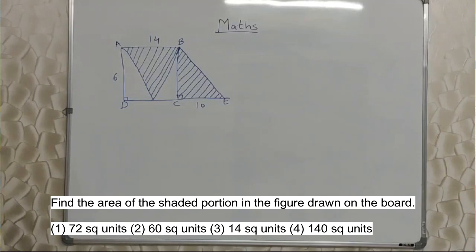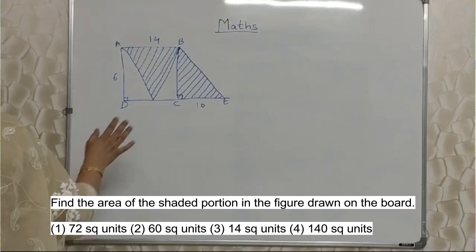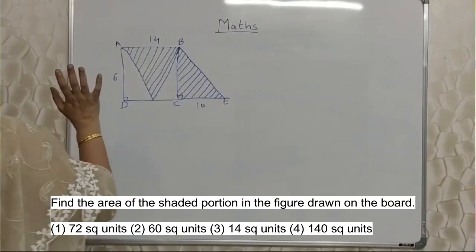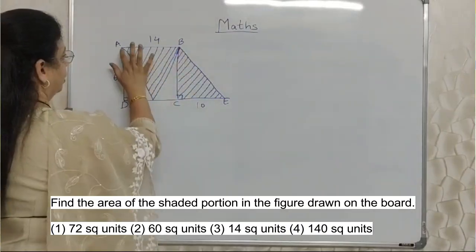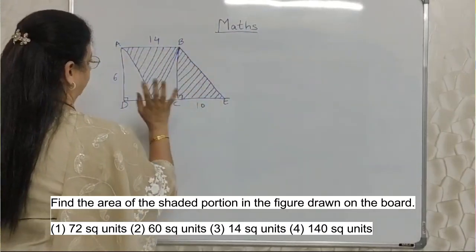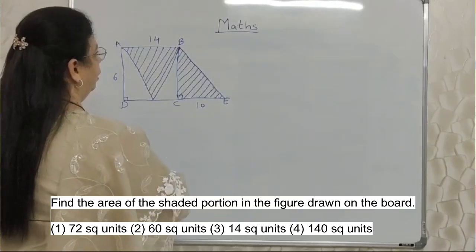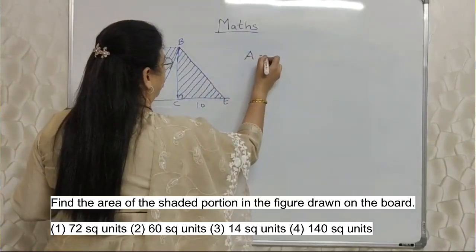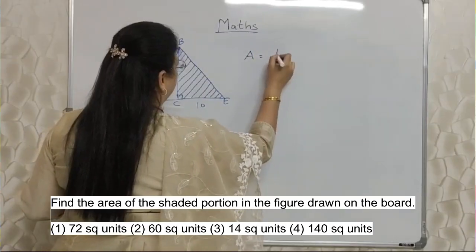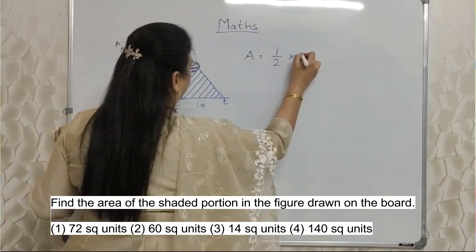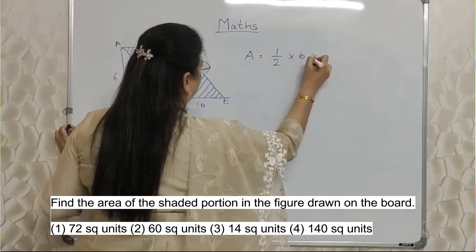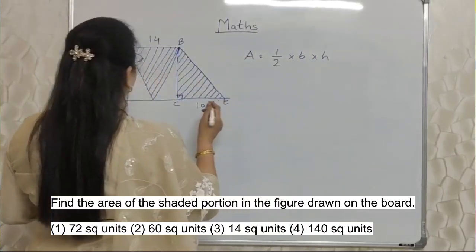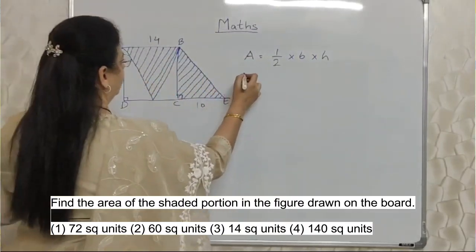Find the area of the shaded portion in the given figure. The figure I have already drawn here. Now this is a triangle, and this is again a triangle. So here we want to find out the area. What is the formula for the area of any triangle? Half into base into height — you all are aware. So let's find out; first concentrate on the triangle.